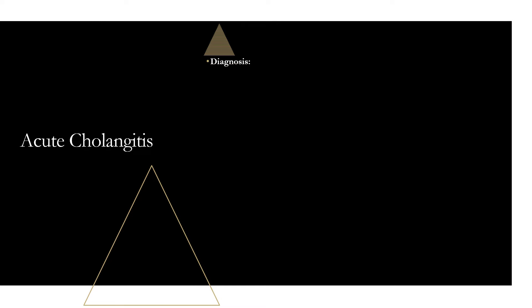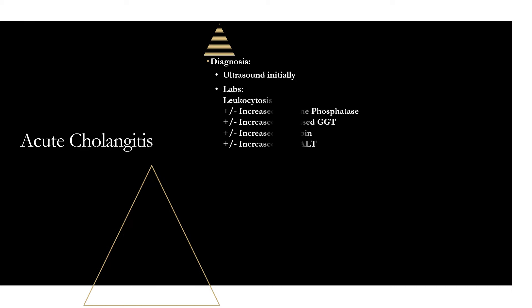For diagnosis, start with an ultrasound initially, just like all the other biliary disorders, and then get labs. You may see leukocytosis, which will be neutrophil-dominated given the serious infection. Labs will show that cholestatic pattern: increased alkaline phosphatase, increased GGT, increased bilirubin, and increased AST and ALT due to the biliary stasis. Another imaging option is MRCP — using MRI to visualize the biliary tract — which is more accurate than ultrasound but is expensive, time-consuming, and these are sick patients you need to diagnose and treat quickly.